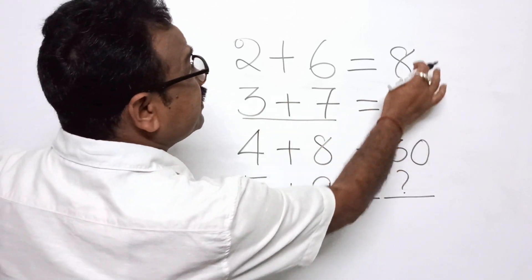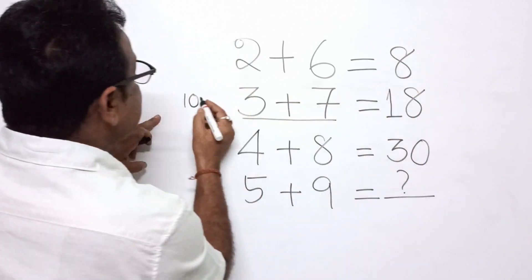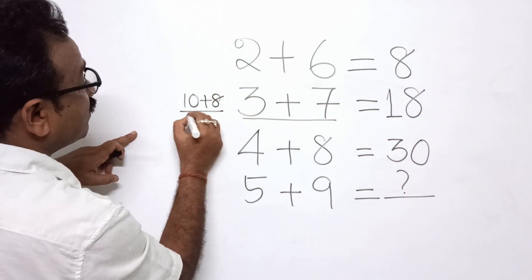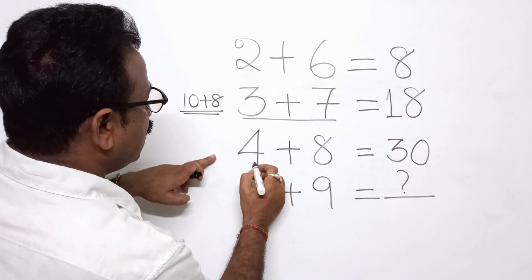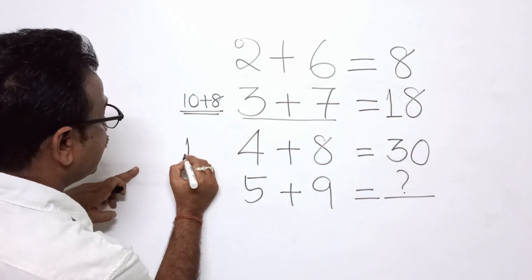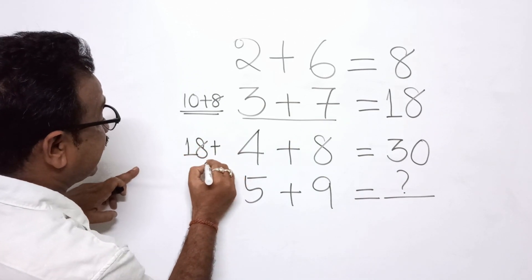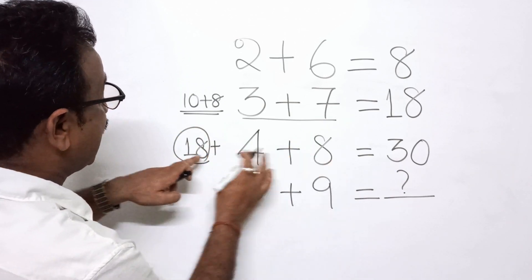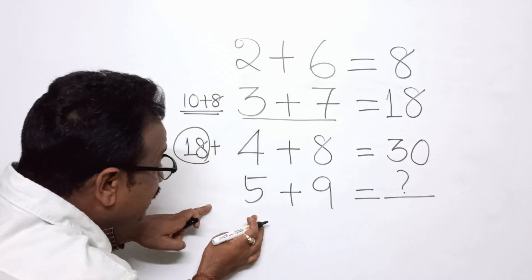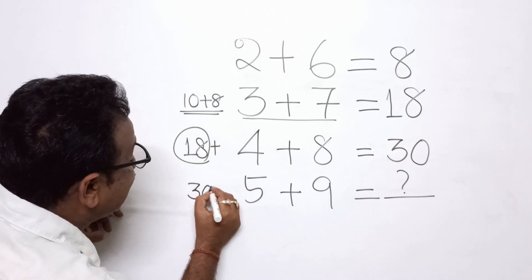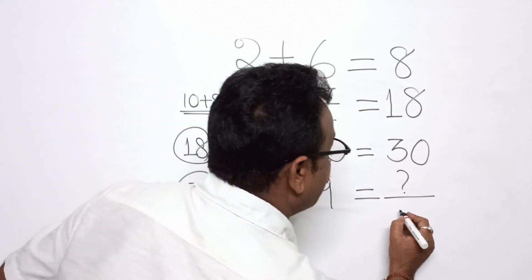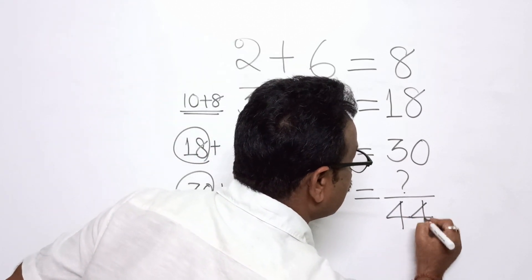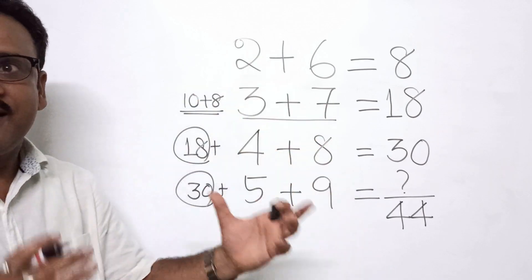We are getting 18, that means this 8 has been added. So that 8 has been added here. Now 18, this is added here. Now 12 plus 18 is 30. Now similarly, 30 will be added here. Now this will become 39, plus 5 is 44. So 44 is the answer.